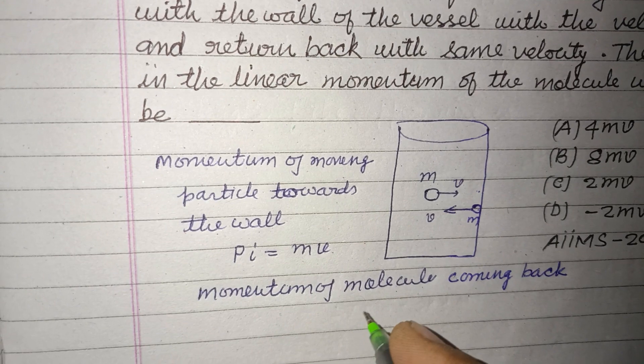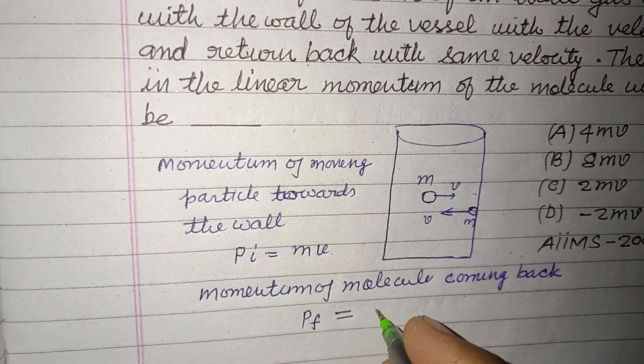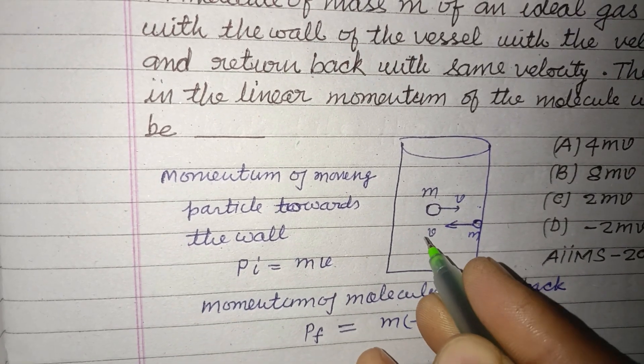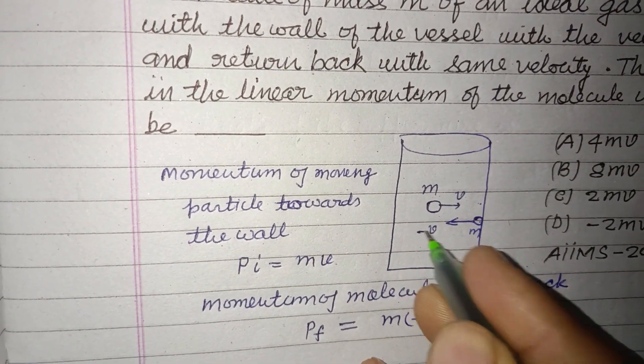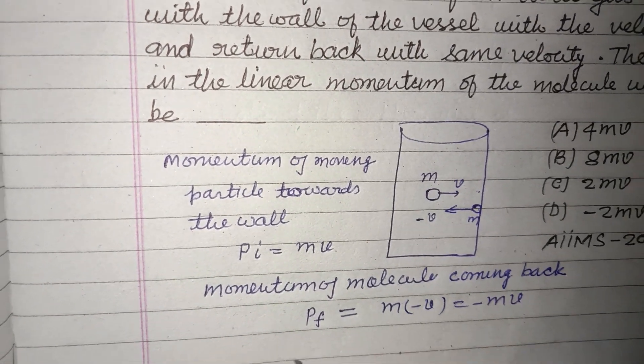After hitting the wall is equal to P final, which is m into minus v, because direction is changed. So this is minus mv, therefore...